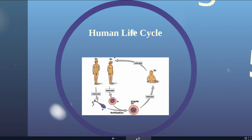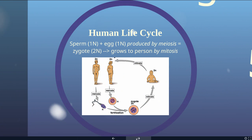If we look at the human life cycle, we're going to take a haploid sperm and a haploid egg. These are both produced by meiosis, and together we get a zygote which is now 2n. That cell is then going to grow into two cells, four cells, eight cells through the process of mitosis.